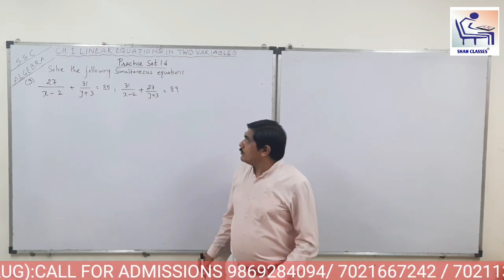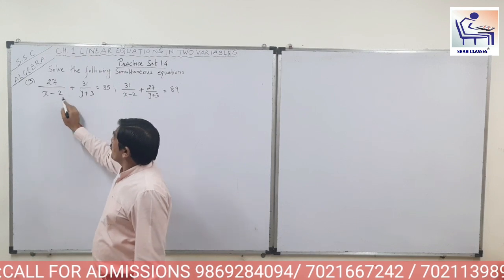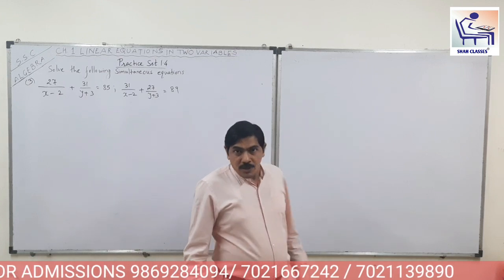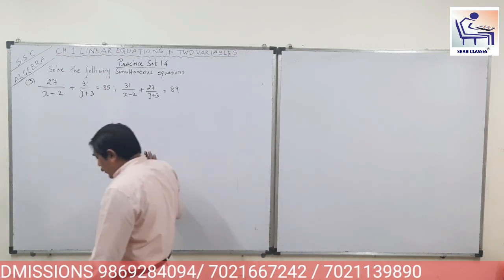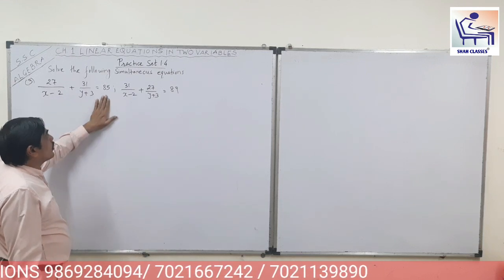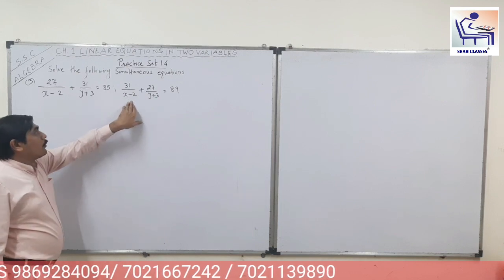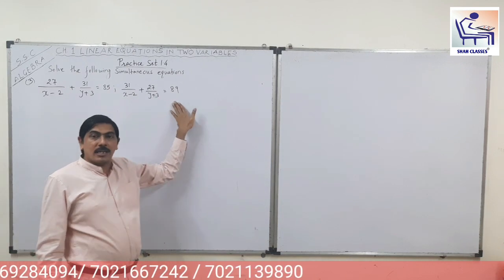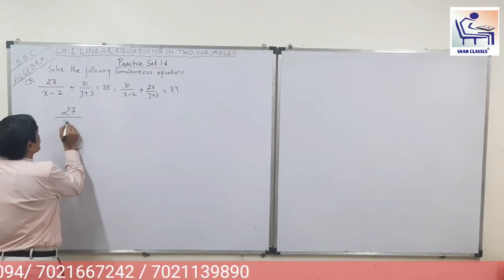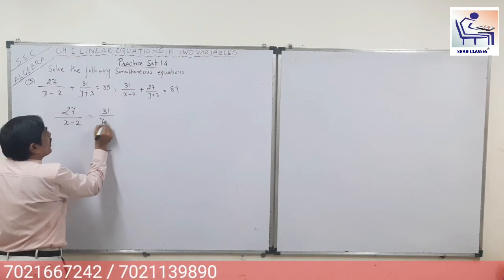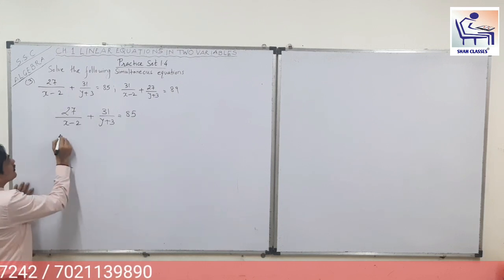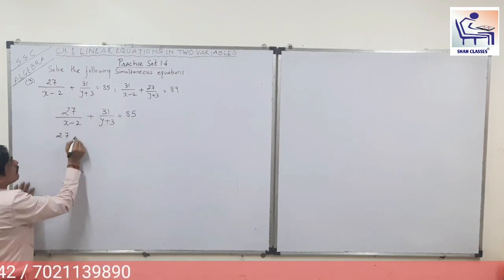In this sum, the same way we have to replace (x minus 2) and (y plus 3) with some other variable. So here we will separate the denominators. Your first equation is 27 upon (x minus 2) plus 31 upon (y plus 3) is equal to 85.